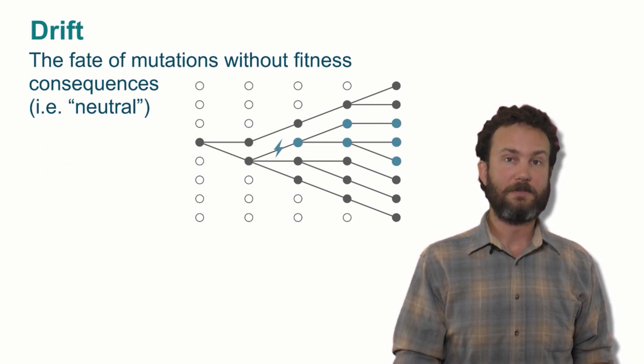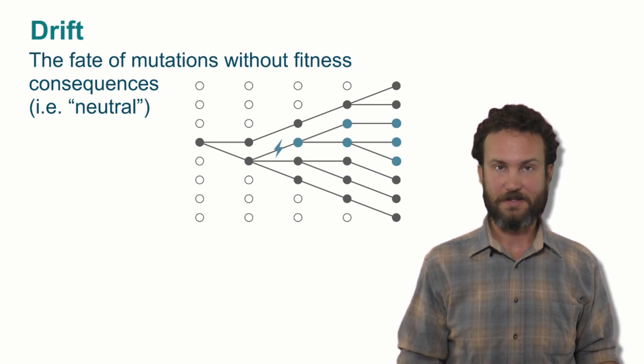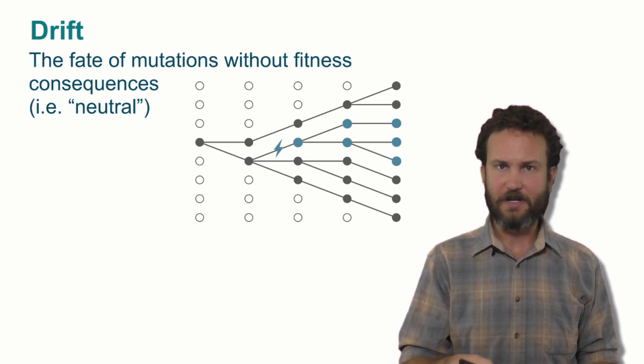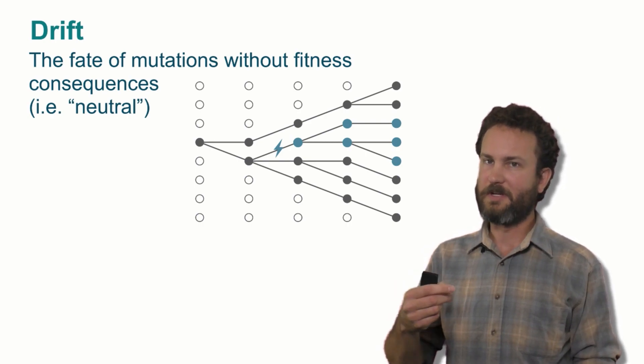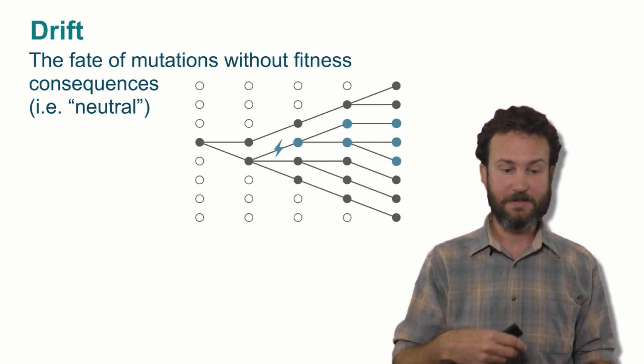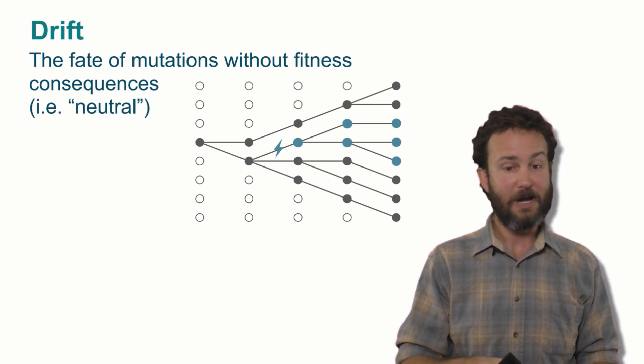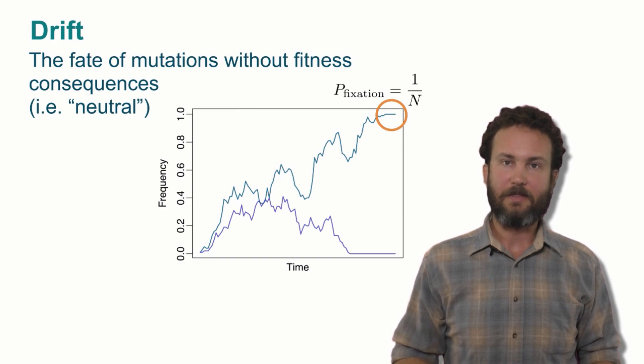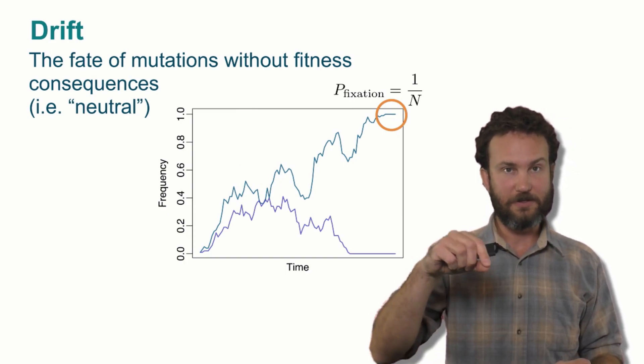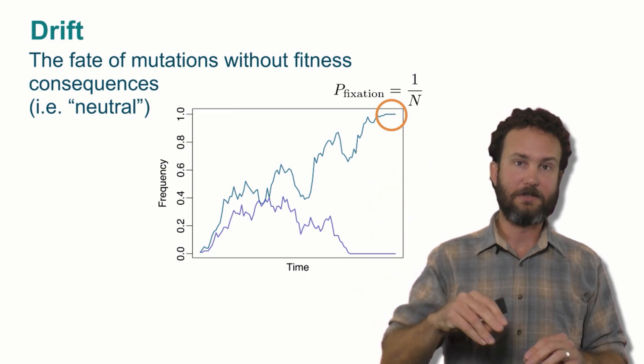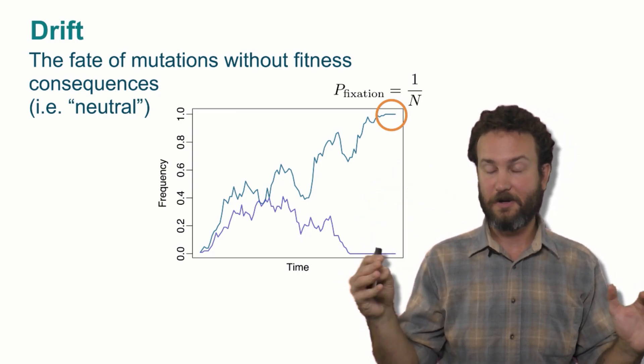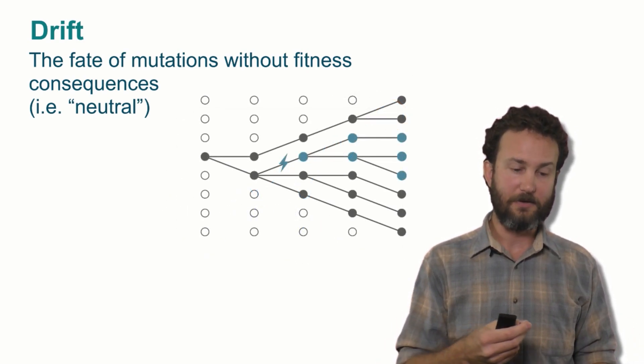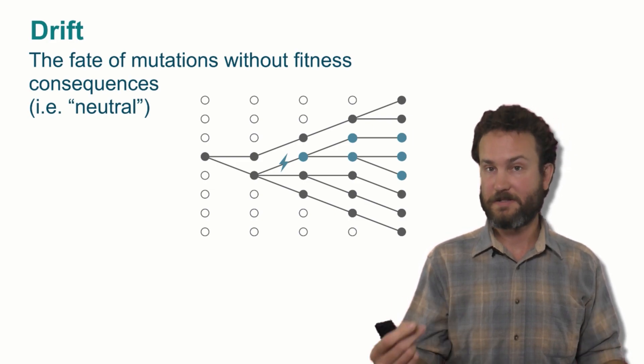The fate of new mutants is then determined by two processes. The first we'll talk about is drift. Drift occurs when this new mutant doesn't have a selective advantage over the existing population. And in this case, this new mutant might immediately die out or it might accidentally drift to a higher frequency in the population. And the probability of that new mutant eventually dominating the population, reaching a frequency of 100%, is very rare. It's 1 over n. So for very large populations, it's very, very unlikely that a neutral mutant will reach fixation, but it's still possible.